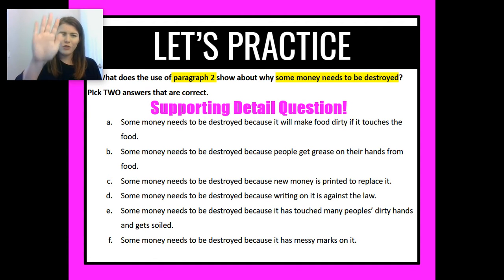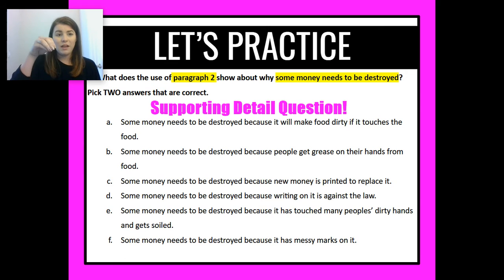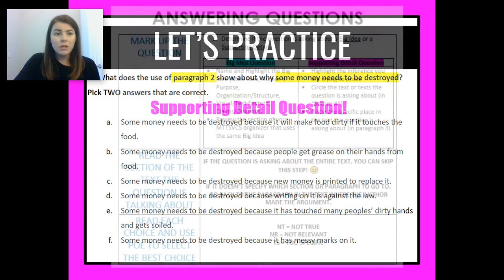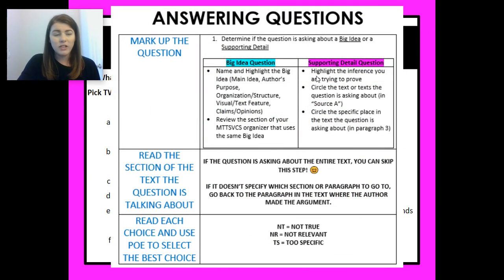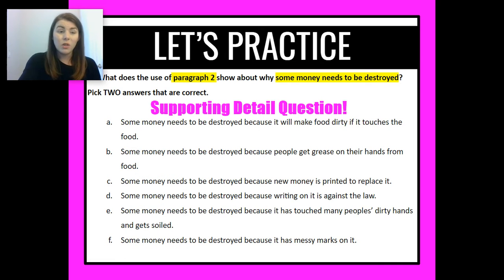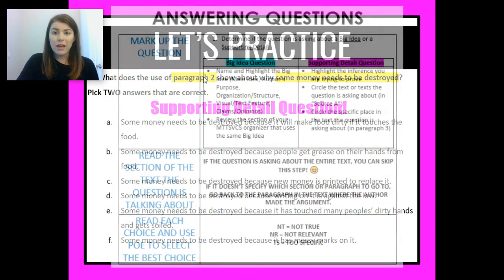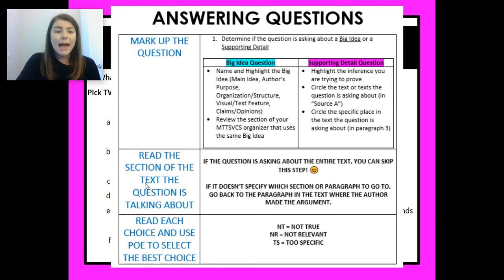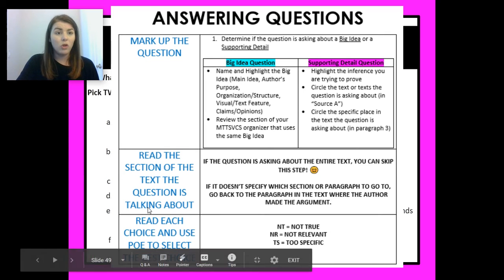If you got that, air high five — good work. Now that we know it's a supporting detail question because it's talking about a specific point in this text, we can figure out how we're supposed to answer it. It's a supporting detail question and we've already highlighted the inference we're trying to prove. Now we need to look at where it's asking us to go in the text — paragraph two. I need to go back and reread paragraph two, then use my PO codes to eliminate each answer choice.